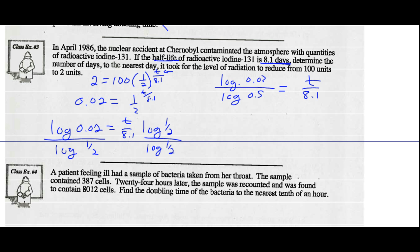I've got log of 0.02 divided by the log of 0.5 will equal t over 8.1. How do I solve for t? I multiply both sides by 8.1, and that will eliminate the denominator of 8.1. That will solve for t. Do that with your calculators. We get about 45.715. To the nearest day, we're going to say about 46 days.